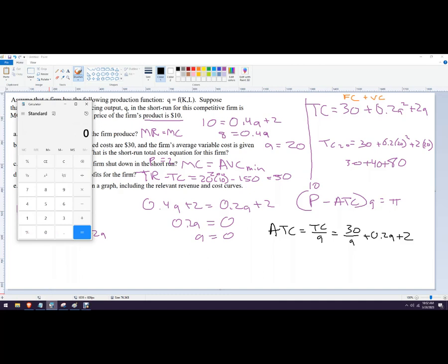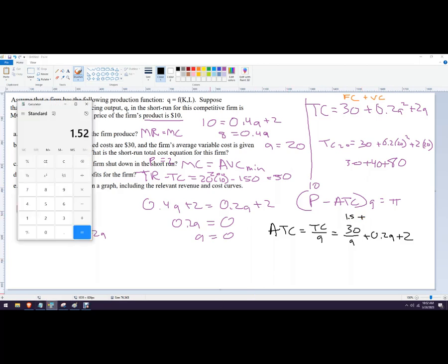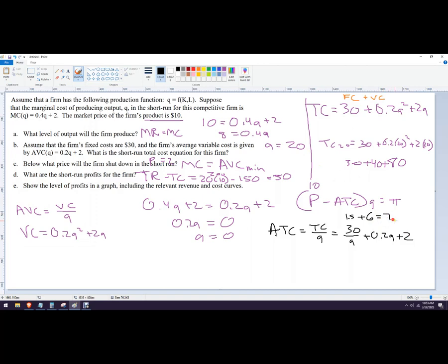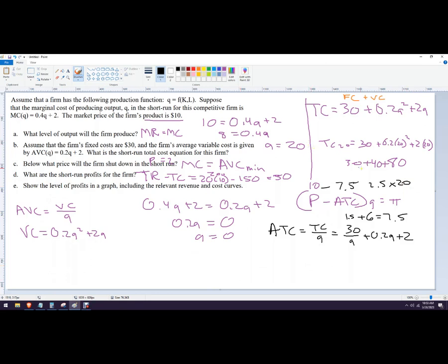So it would be 30 over 20, that's 1.5, plus 0.2 times 20. It's not 0.2 times 10, that's wrong. It's 0.2 times the quantity, which in this case was 20. So it's 4. That would be 6, because 4 plus 2. So I get an average total cost of 7.5. The difference there is 2.5, times Q times 20. That's 50 as well. I knew it had to have been 50, but that also equals 50. So either way works.